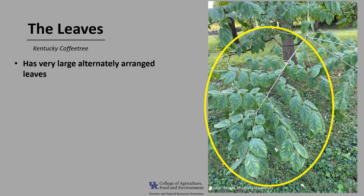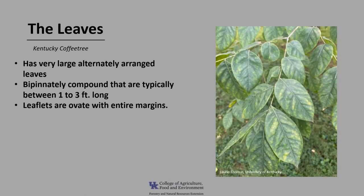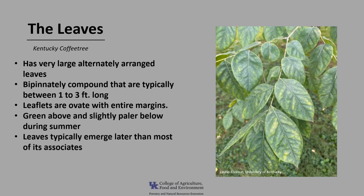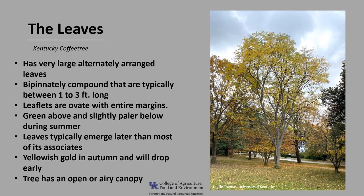Kentucky coffee tree has very large, alternately arranged leaves. The leaves are bipinnately compound — a leaf that is divided into multiple leaflets with each leaflet further subdivided into smaller leaflets, also called doubly compound. The leaves are typically between one to three feet long and are really big leaves. The leaflets are ovate in shape with entire or smooth margins, green above and slightly paler below during the summer. The tree typically leaves out much later than most of its associates. The leaves tend to be yellowish golden in autumn and drop pretty early. The tree tends to have an open or airy canopy creating more of a semi-shade, which is helpful if you want to grow other plants underneath it.